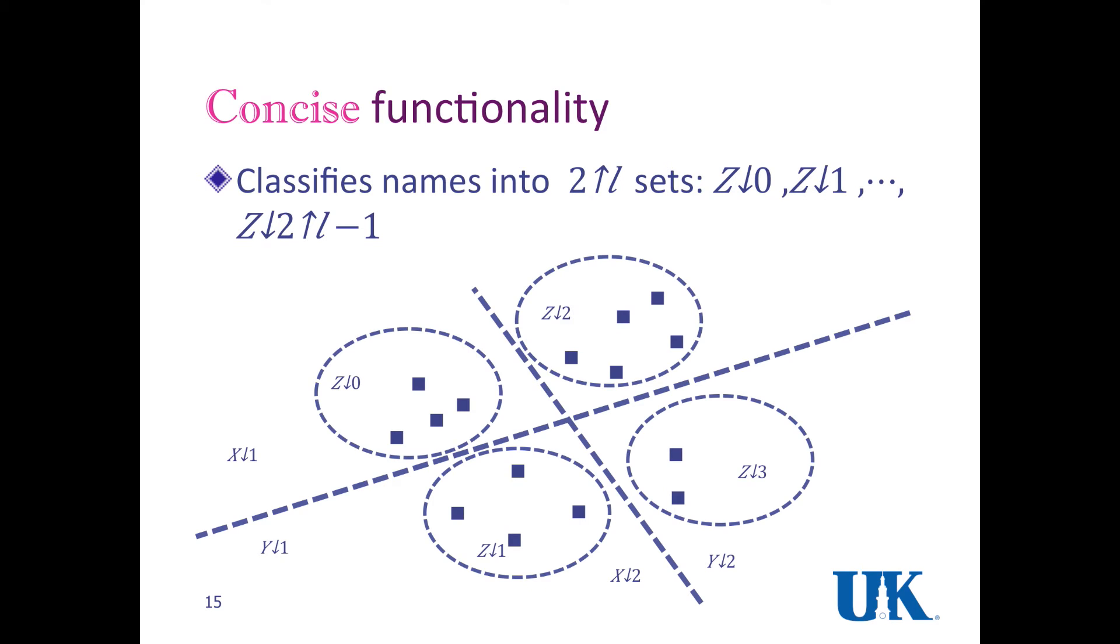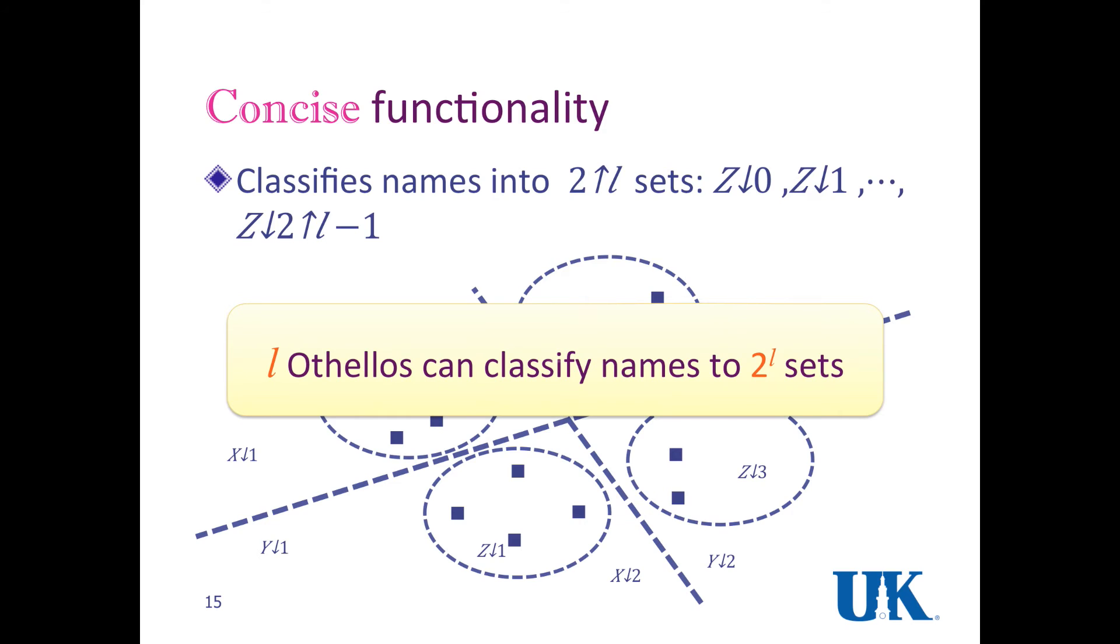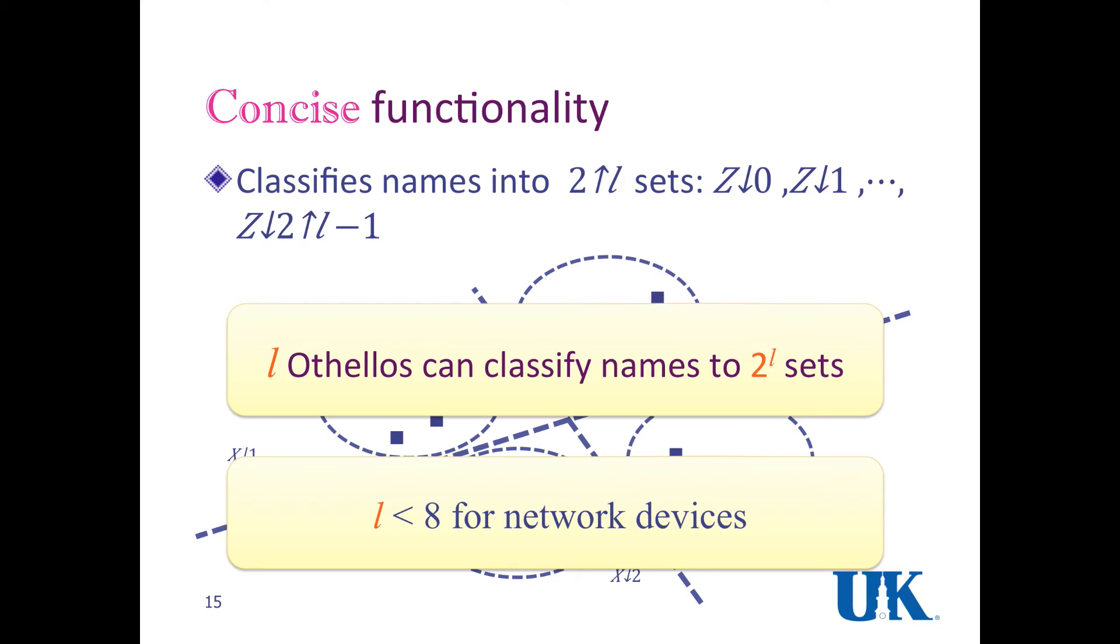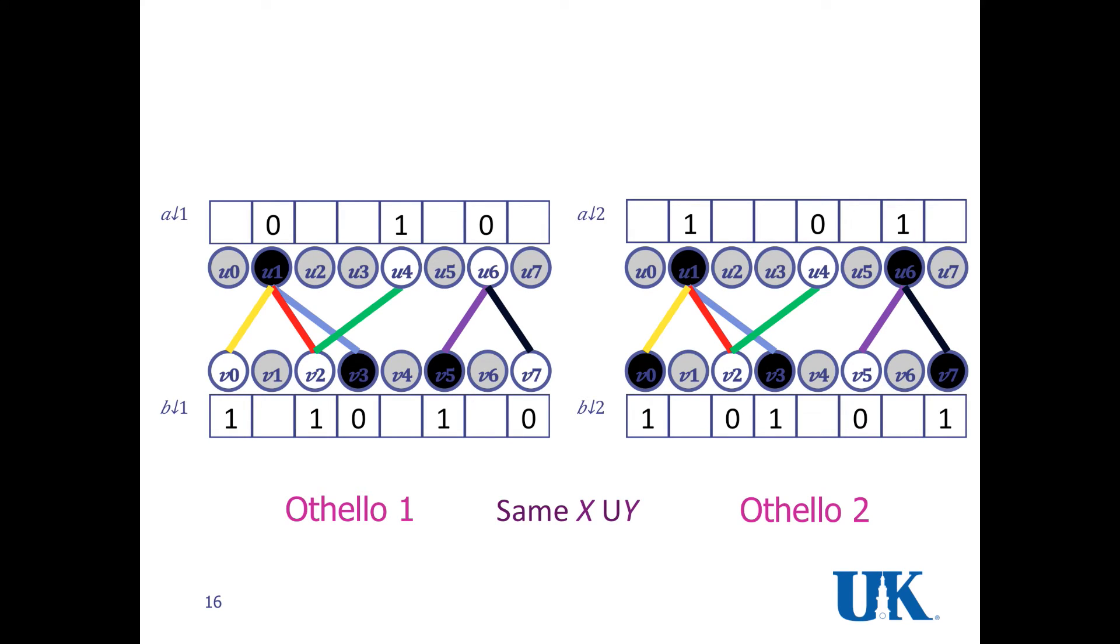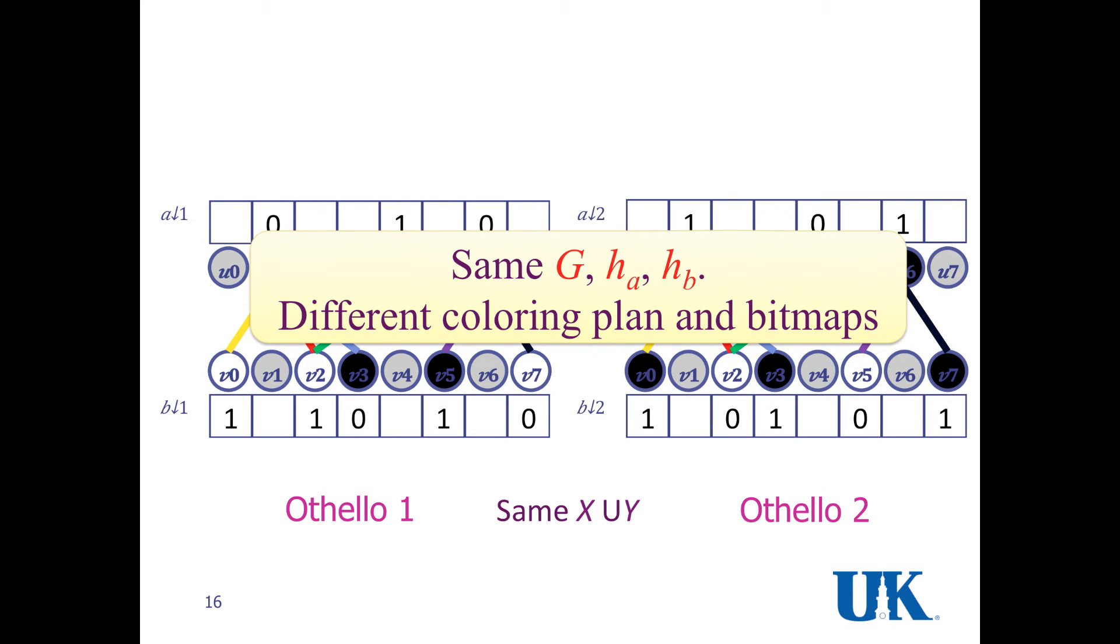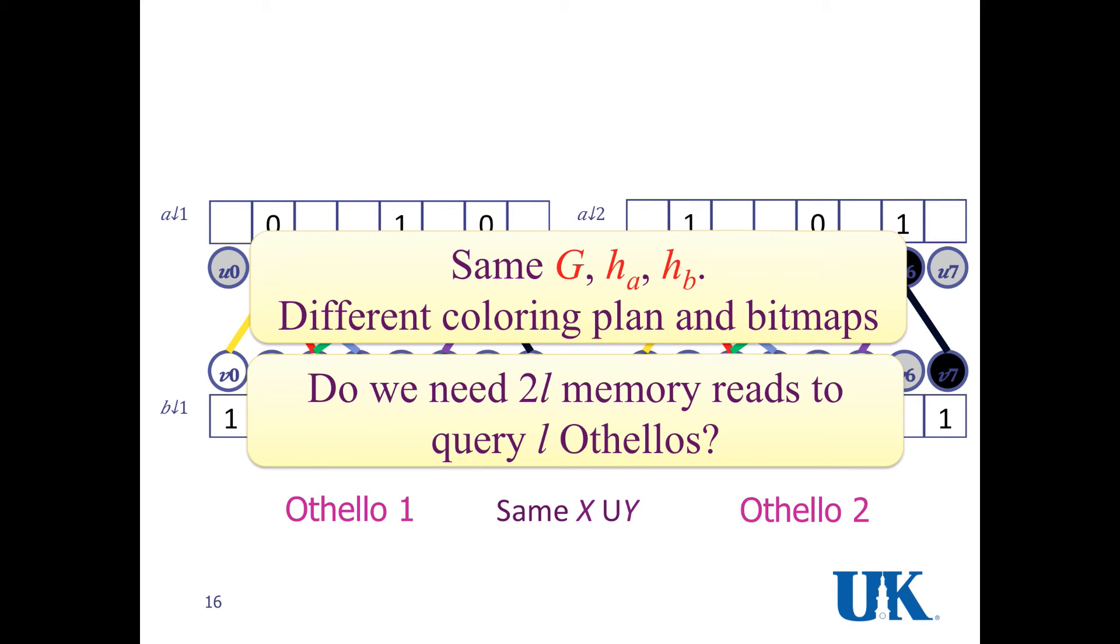We know that for one Othello, we can classify names to two sets. So for using L Othellos, we can classify names into two to the L sets. We have to maintain L Othellos in a FIB. L is usually less than eight for most networking devices because we don't expect that we have too many forwarding actions on a FIB. In this example, we can see that these are two Othellos on one forwarding information base. Those structures are for the same set of names. They have the same acyclic directed graph. But the only difference is that the colors and the corresponding bits are different. We have the same G and the same hash functions, but we have different bitmaps.